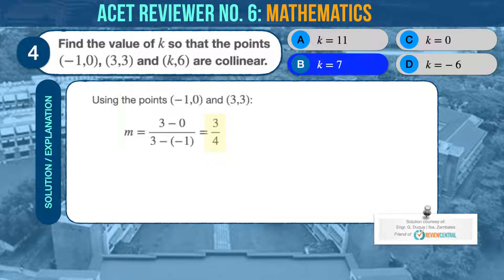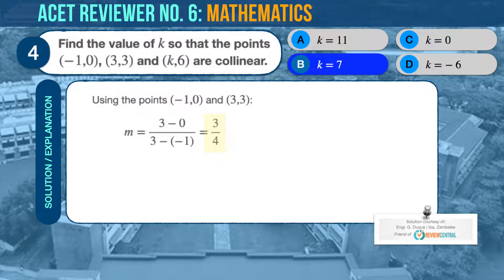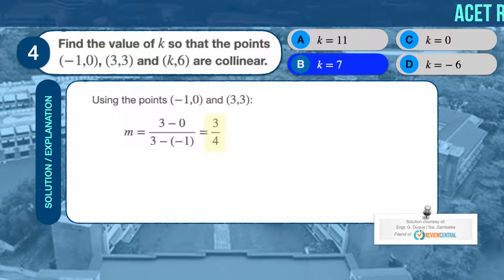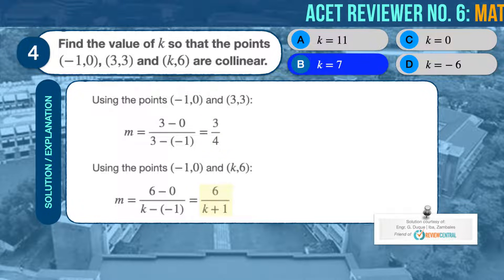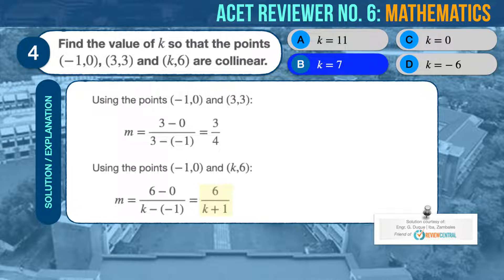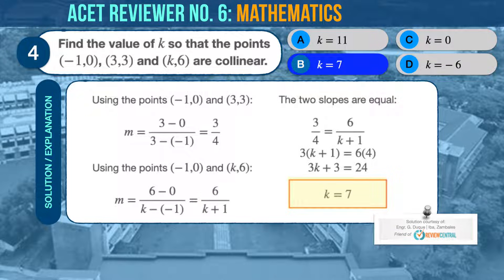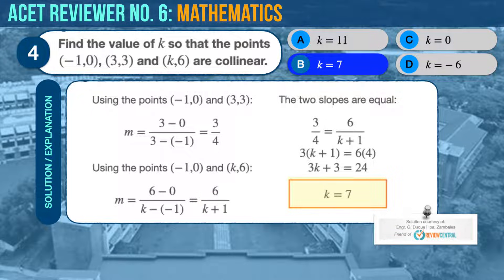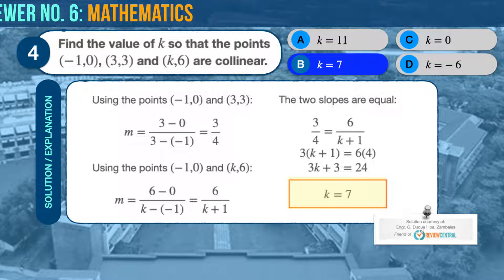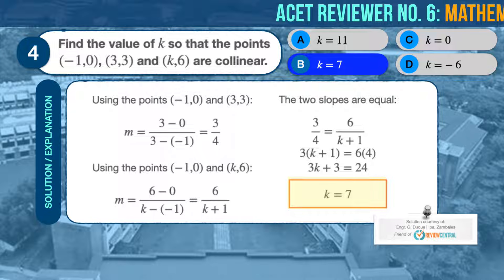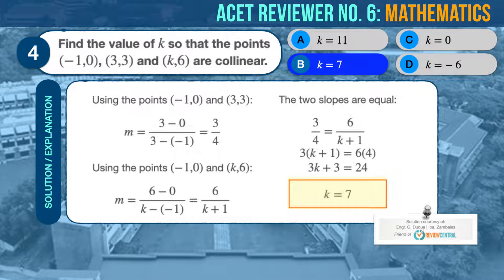For the three given points to be collinear, they must lie on the same line with a constant slope. Using the points negative 1 and 0, and 3 and 3, we can compute for the slope M to be 3 over 4. Using the points negative 1 and 0, and K and 6, we can compute for the slope M to be 6 over the quantity K plus 1. Since all three points are collinear, the two slopes we've just computed must be equal. Therefore, 3 over 4 equals 6 over the quantity K plus 1. From this equation we can compute for K, and arrive at 7 as the answer. Therefore, the correct answer is B, K equals 7.